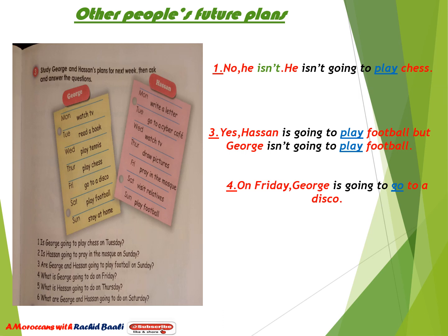I've given you three examples and I need you to help me with the three others. For the first question: 'Is George going to play chess on Tuesday?' The answer is no, he isn't. He isn't going to play chess on Tuesday. For question three: 'Are George and Hassan going to play football on Sunday?' The answer is yes — Hassan is going to play football, but George isn't going to play football.